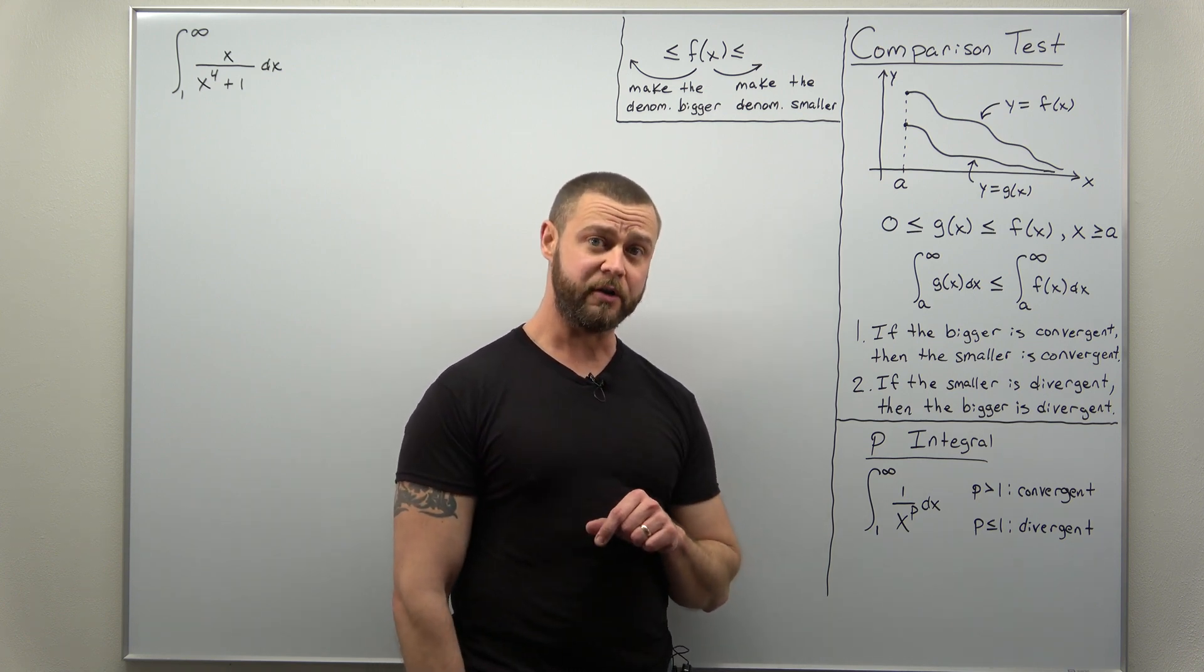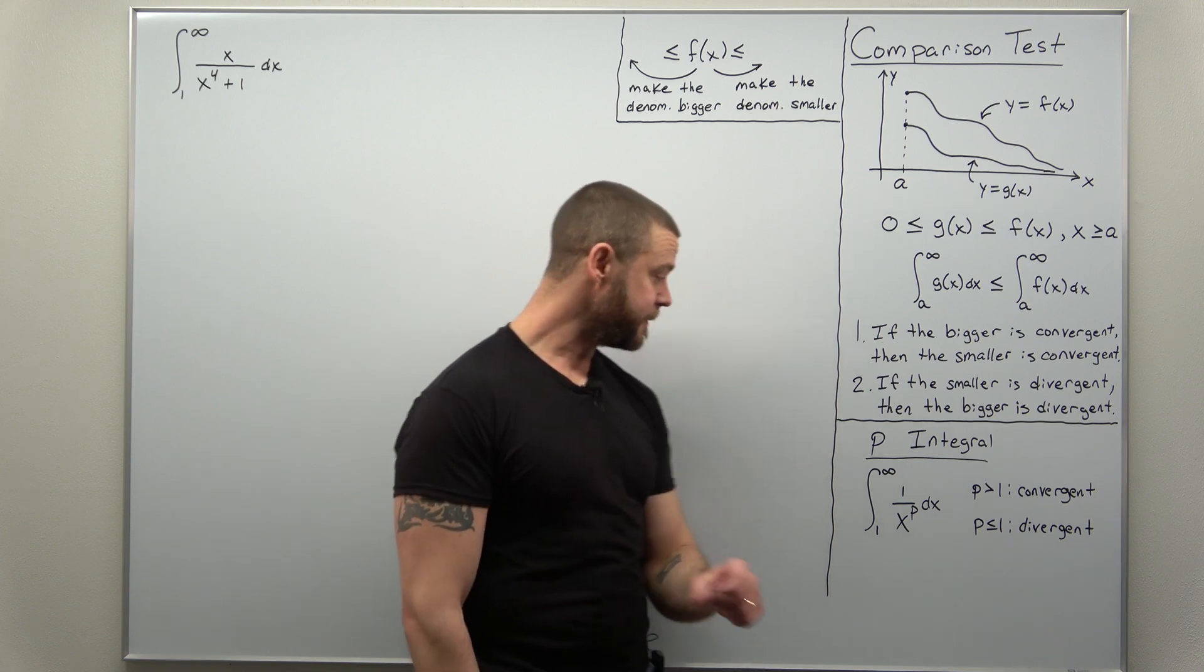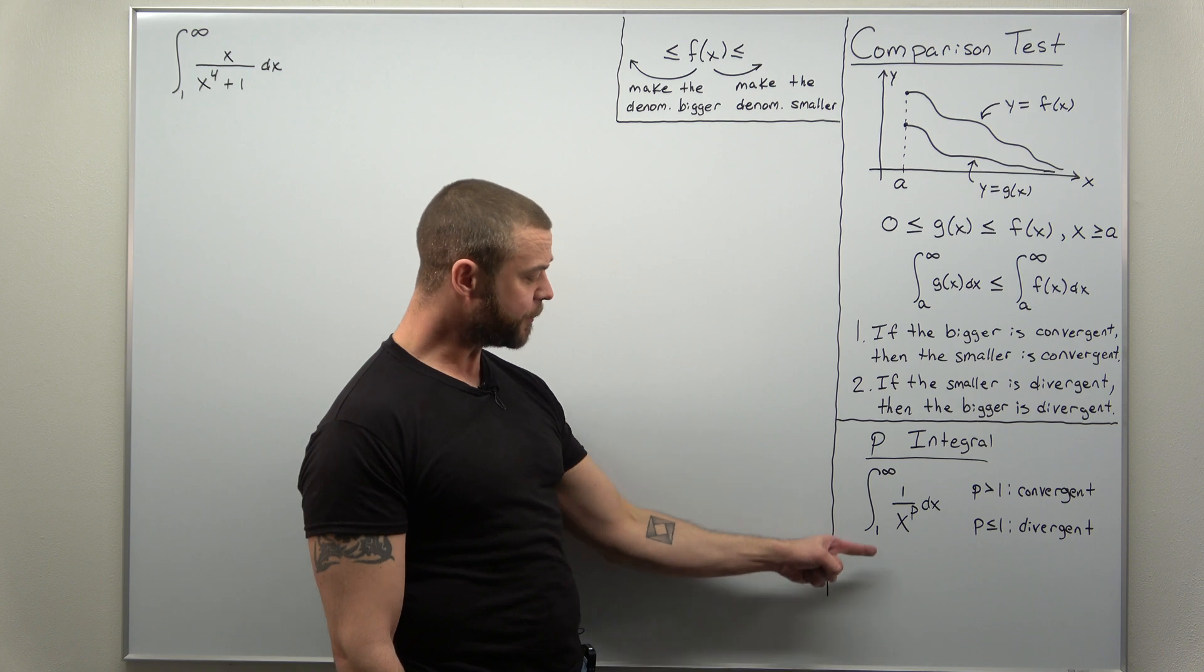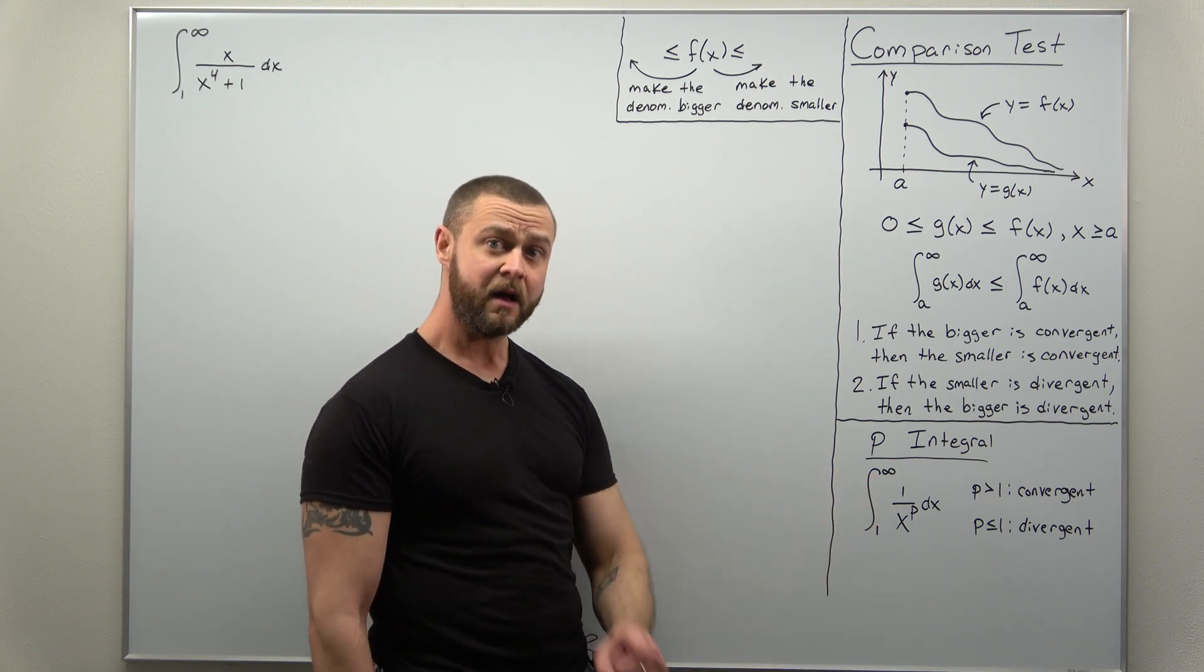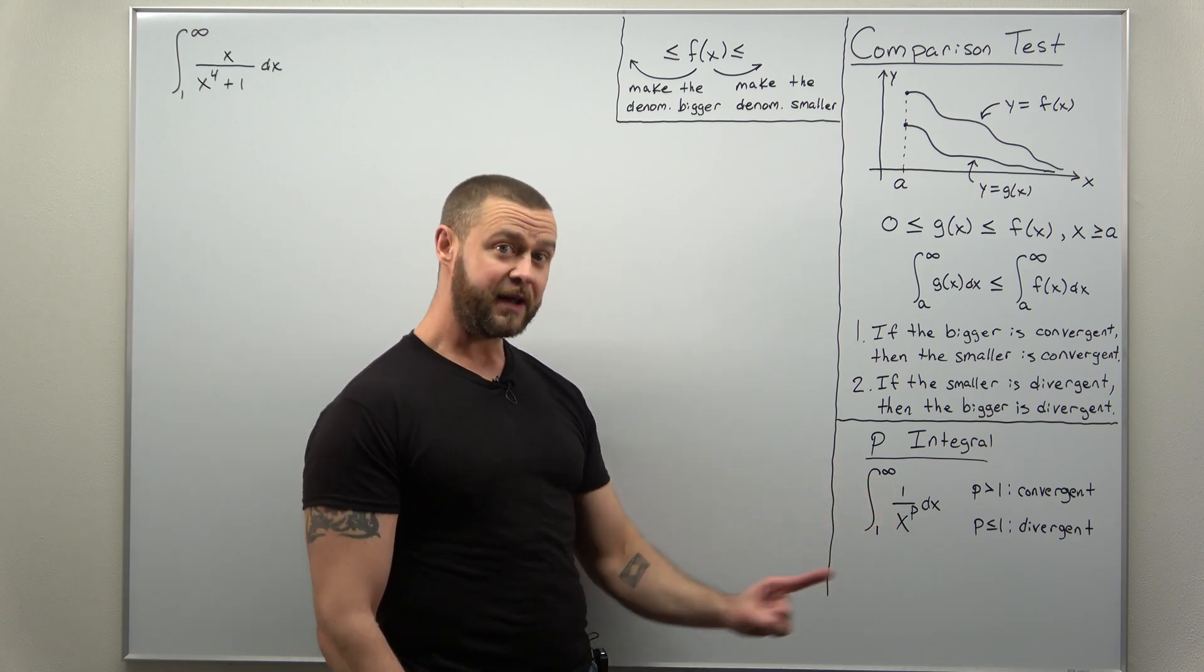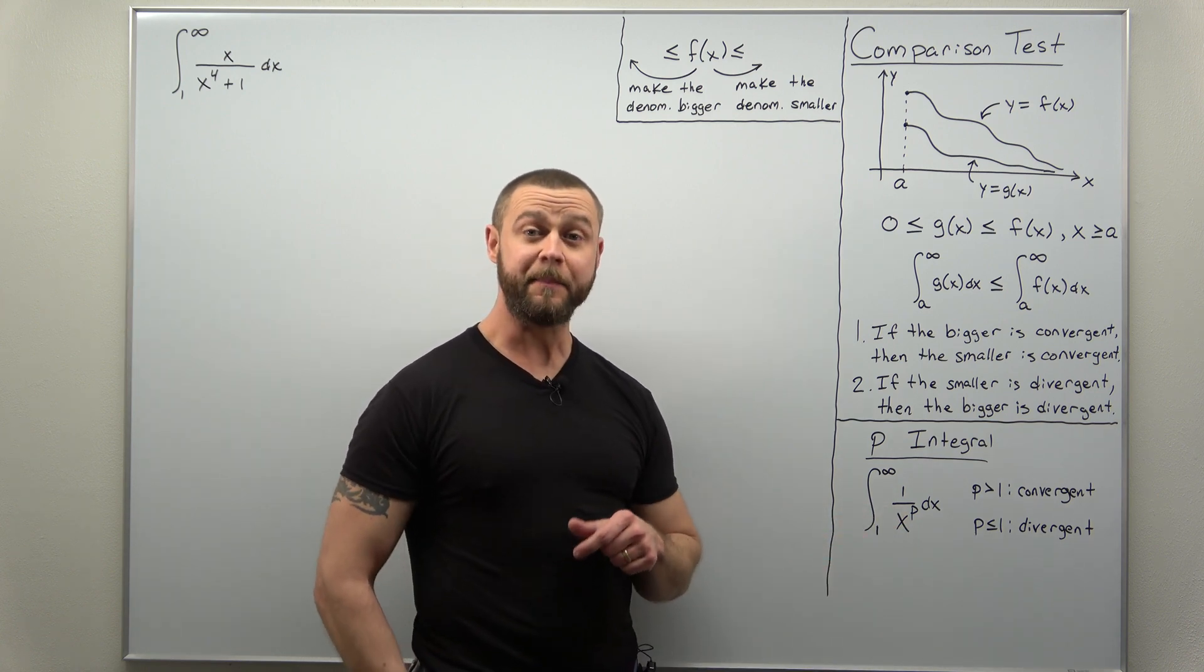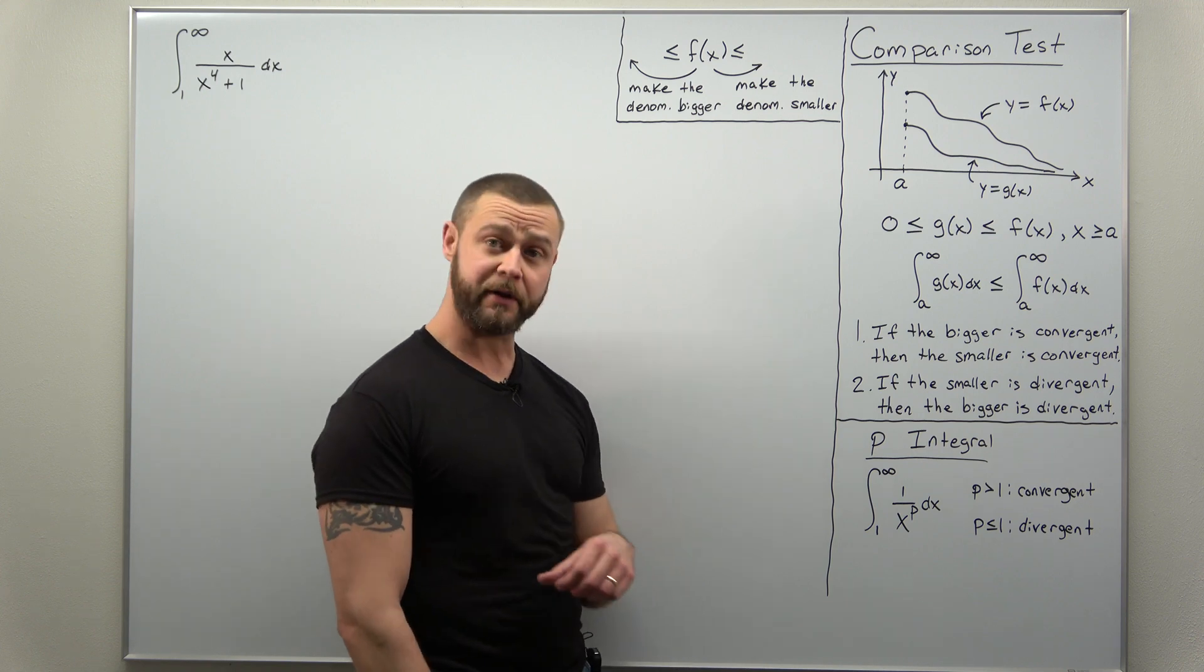The other thing that we're going to use, which you likely have covered already, is this thing called the p integral. And it's an improper integral from one to infinity for the function one over x to a power. And the power, that's where the name p comes from. That's our exponent there.